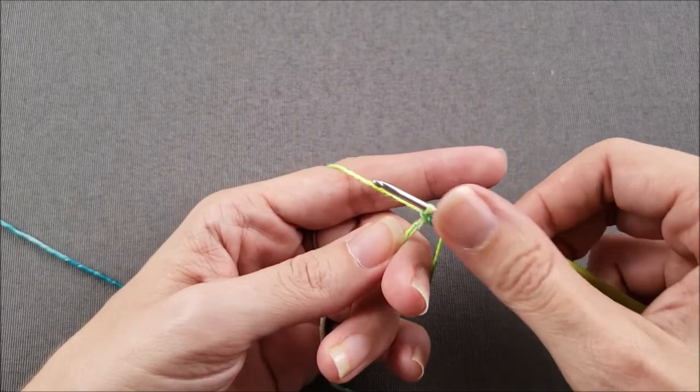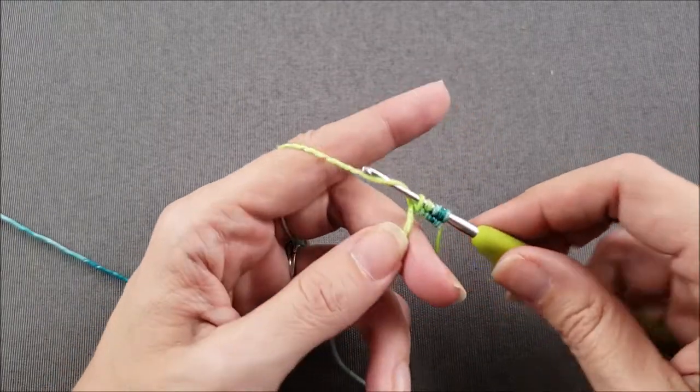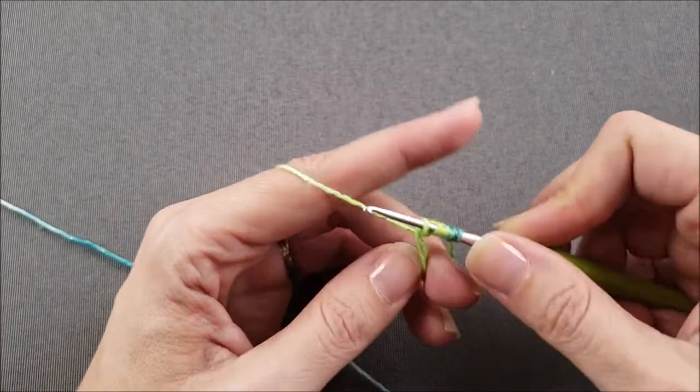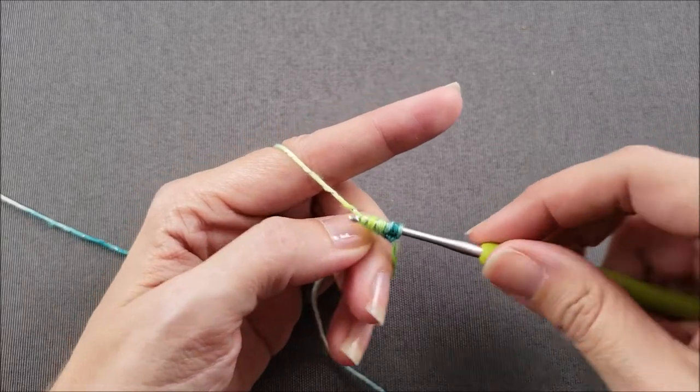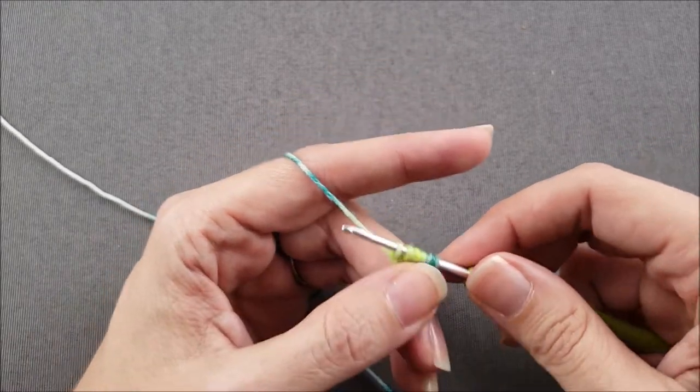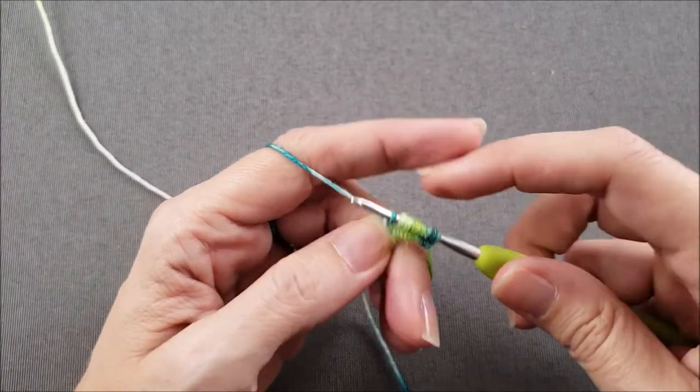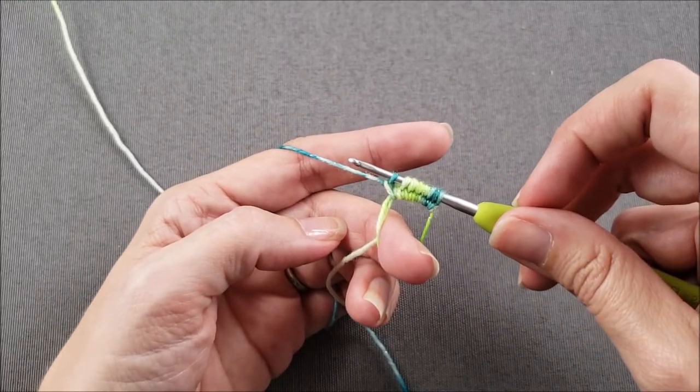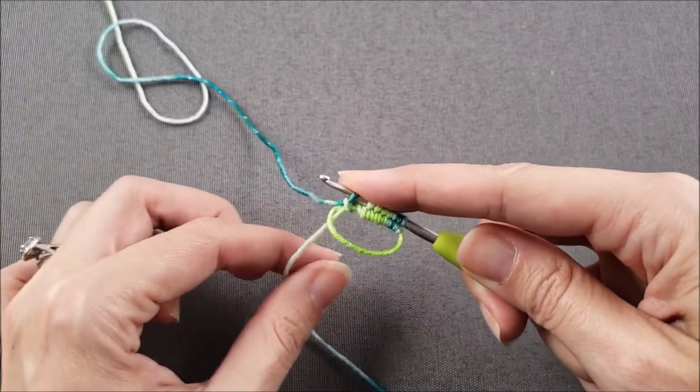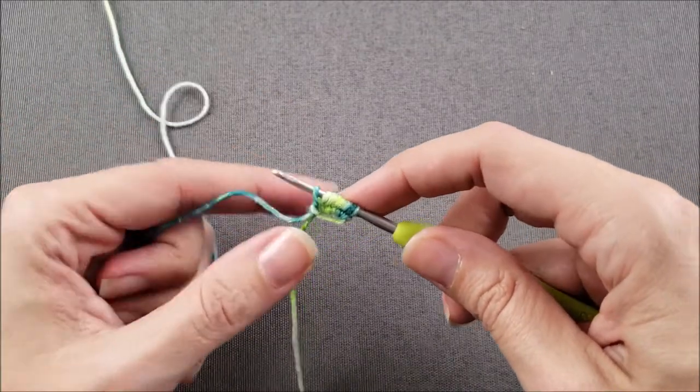So now I have four stitches and I'm going to continue because I need a total of eight stitches cast on. Once all your stitches are cast on, you can take your finger out of the ring and then when you pull on the yarn tail it's going to tighten up and close that loop. I'm not going to quite close it all the way yet; I'll do that later.